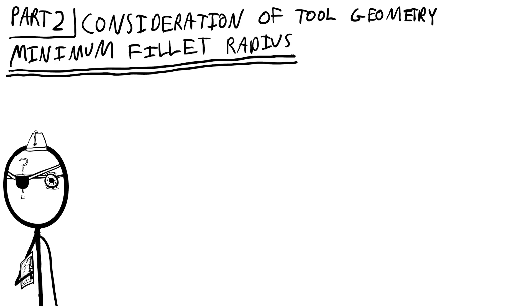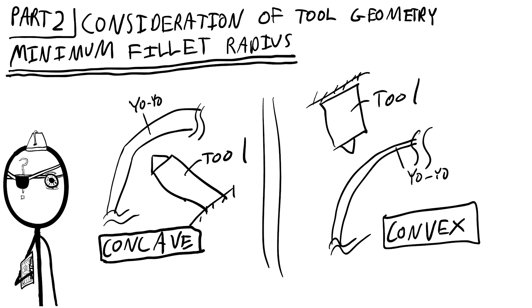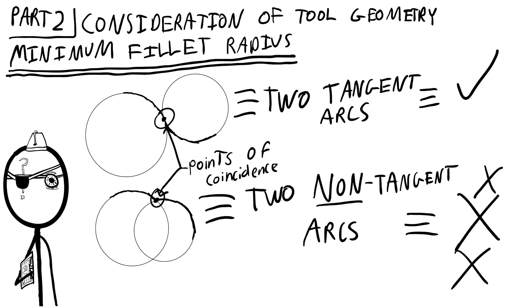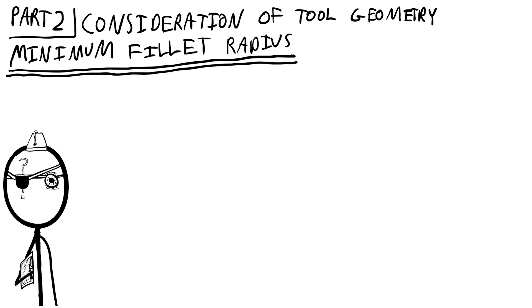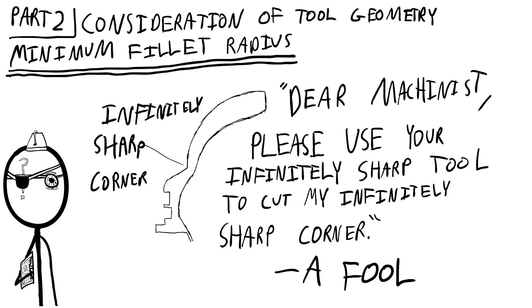Now onto minimum fillet radius. For nearly any concave turning operation involved in turning your yoyo, you will want to avoid leaving two non-tangent arcs or lines coincident with one another, as this leads to the classical problem of what I like to think of as sharpness. If you design an object, say a yoyo, which has an infinitely sharp corner cut into it like you see here, you need to ask yourself, what kind of tool can possibly cut that? Is it possible to make an infinitely sharp cutting tool? No.